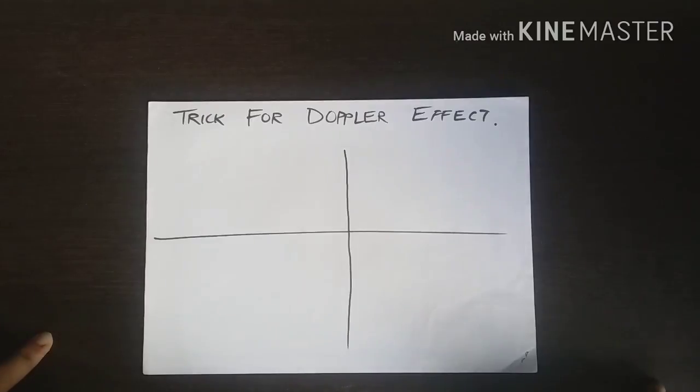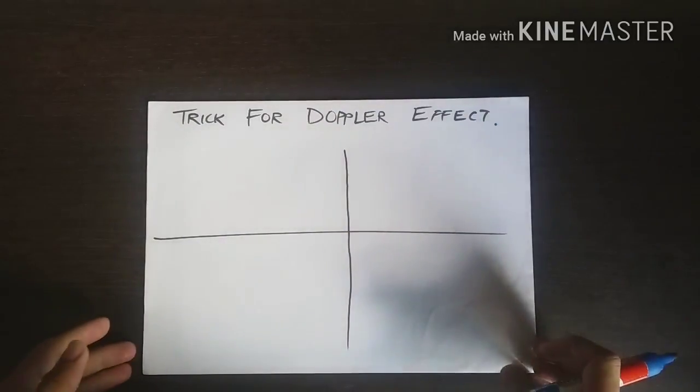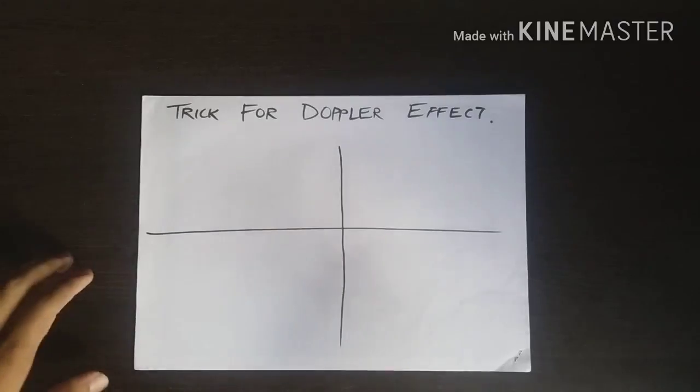I've taken up this topic of Doppler effect, where I'm going to tell you a very awesome trick to remember the formulas. Doppler effect is the phenomenon where an apparent frequency change happens because of relative motion between the observer and the source. Let's see what the general formula is.